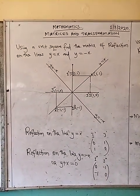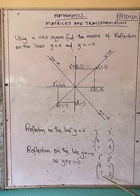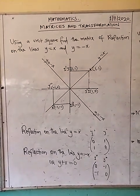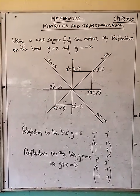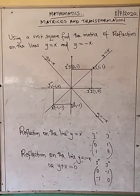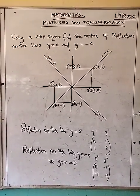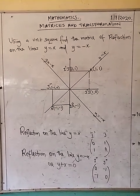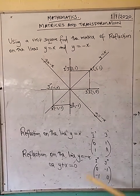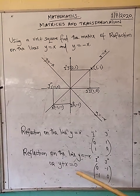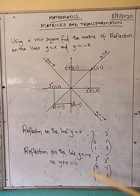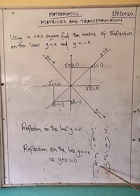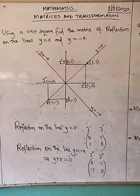So therefore we come up with a matrix, and the matrix is [[0, negative 1], [negative 1, 0]]. That is the matrix that represents the reflection on the line y equals negative x. The line y equals negative x can also be written as y plus x equals 0, or simply x plus y equals 0. It is the same line. And the matrix that represents a reflection along that line is [[0, negative 1], [negative 1, 0]].